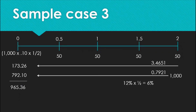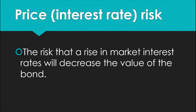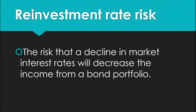Once you are able to arrive at the value of the bond, take note that this is not necessarily permanent. Factors in the economy can change, interest rates in the market can change, and other things will have an effect on the bond's value. In the next video, we are going to talk about the risks that investors face from holding a bond. For example, we have the price or interest rate risk, which is the risk that a rise in market interest rates will decrease the value of the bond. We also have reinvestment rate risk, the risk that a decline in market interest rates will decrease the income from a bond portfolio.